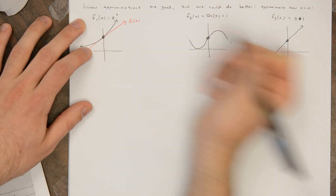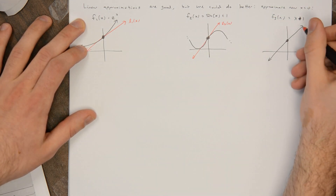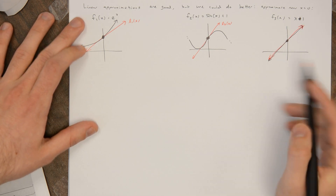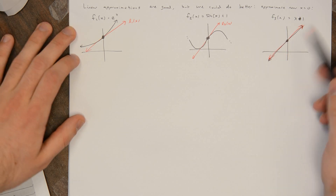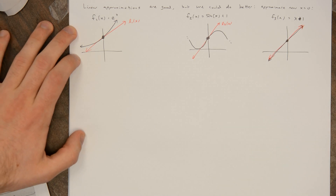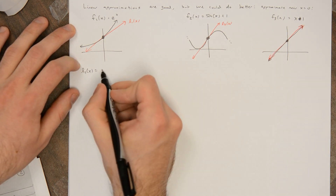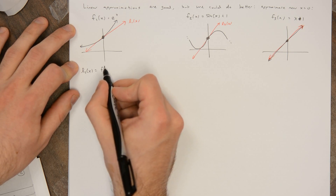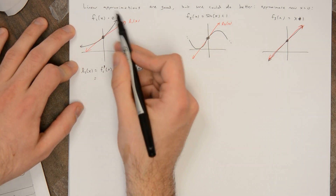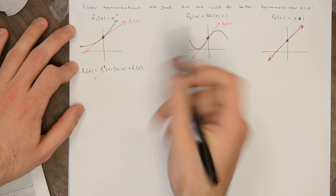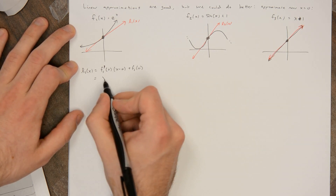This will be l1(x), and this will be l2(x), and this is going to be l3(x). Not surprisingly, the tangent line approximation to a line should give you the same line — there's no other line that approximates a line better than itself. So l1(x) has equation f1'(0) · (x − 0) + f1(0). The derivative of e^x is e^x itself, so evaluated at 0 you get 1 for both, giving 1·(x − 0) + 1, which is just x + 1.